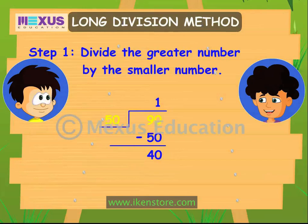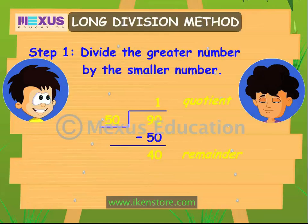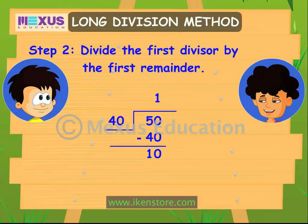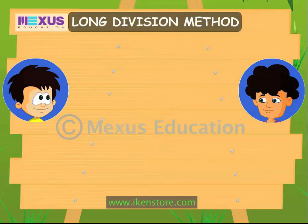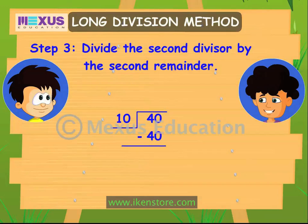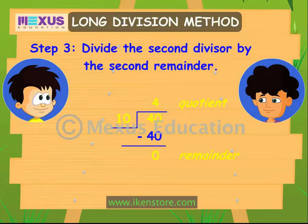First, divide the greater number by the smaller number — that is, divide 90 by 50. That gives 1 as the quotient and 40 as the remainder. Now we divide the first divisor, that is 50, by this remainder, that is 40. We get 1 as the quotient and 10 as the remainder. Now divide the second divisor by the second remainder — that is, divide 40 by 10. This gives us 4 as the quotient with 0 remainder.